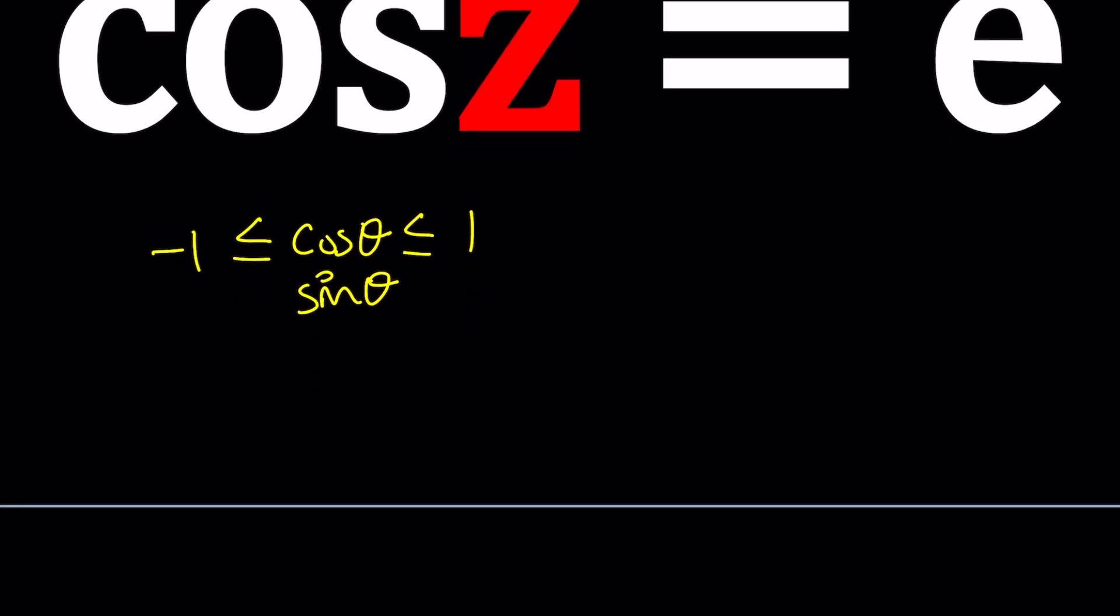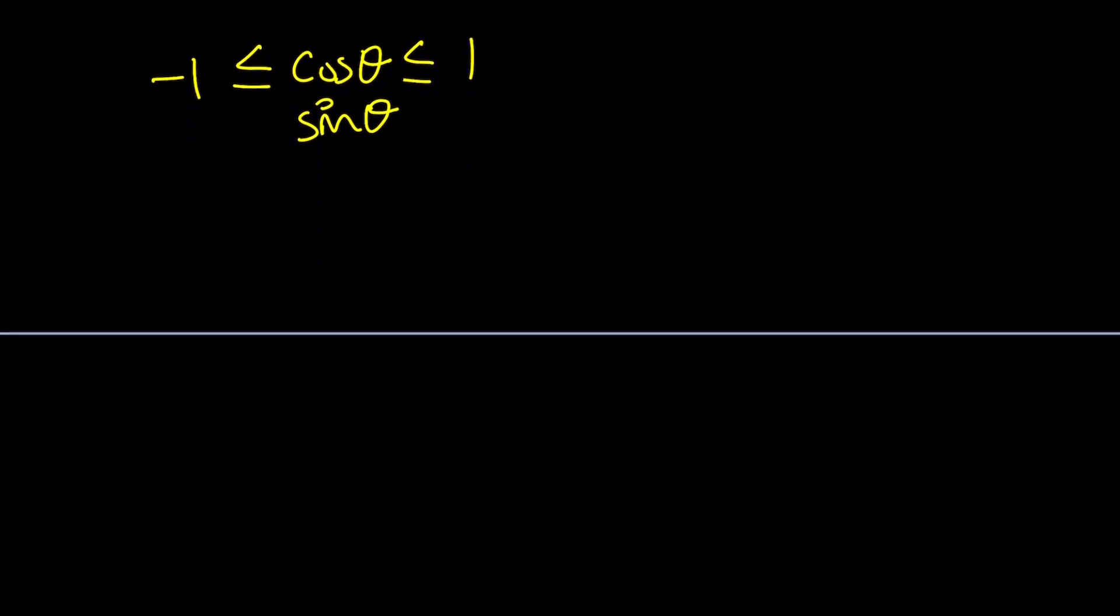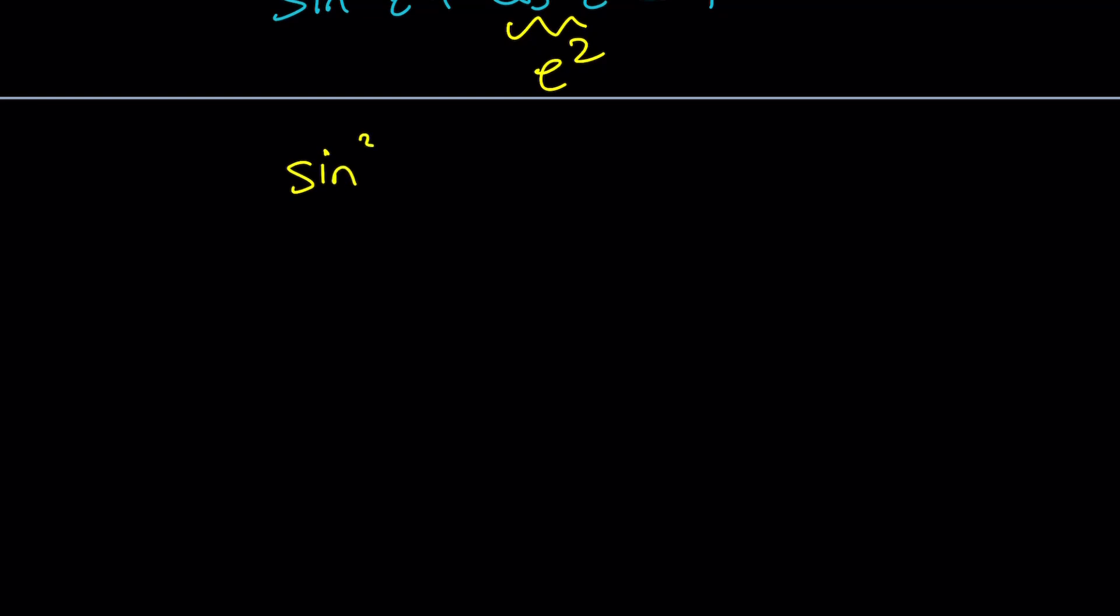So if you think about the famous identity, sine squared z plus cosine squared z equals 1, this is also true for complex numbers. And if you replace cosine z with e, you're going to get e squared. And then from here, sine squared of z is just going to be 1 minus e squared. And then you want to square root both sides, and you're going to get two solutions, plus minus the square root of 1 minus e squared. But e squared is greater than 1. Therefore, 1 minus e squared is less than 0, and the square root of a negative number is not real.